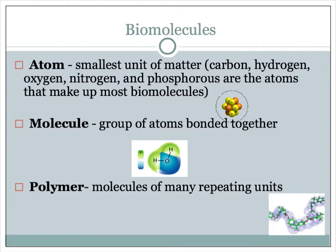A molecule is a group of atoms that are bonded together. And a polymer is molecules in many repeating units — this is the only new word here that you don't know. Poly means many, so a polymer is just many molecules that repeat themselves.